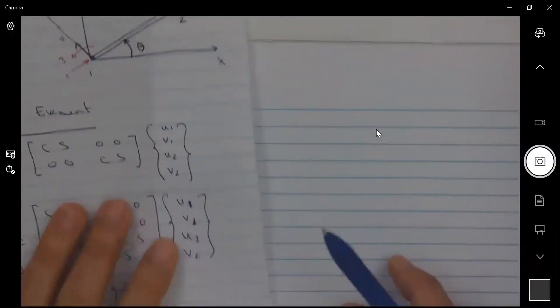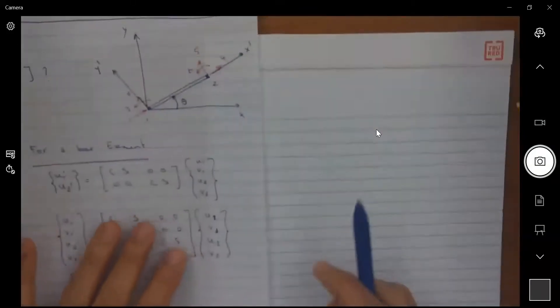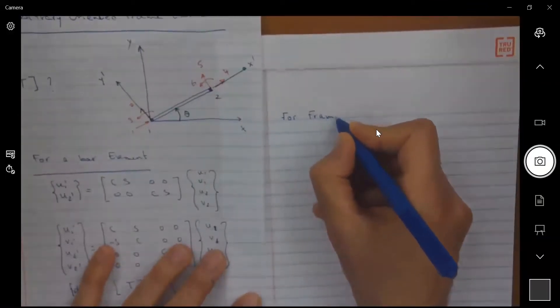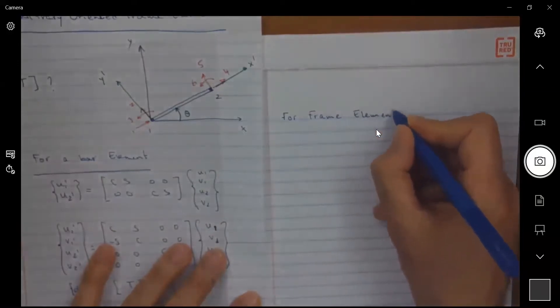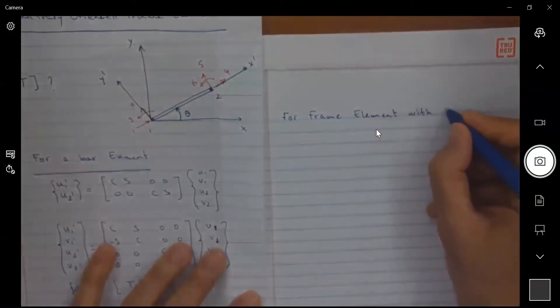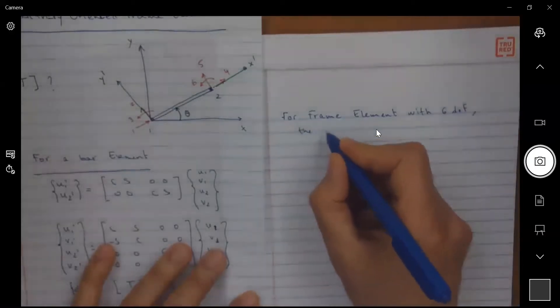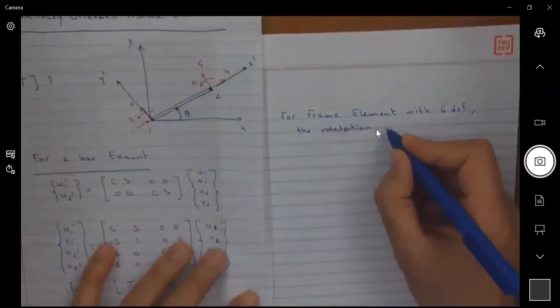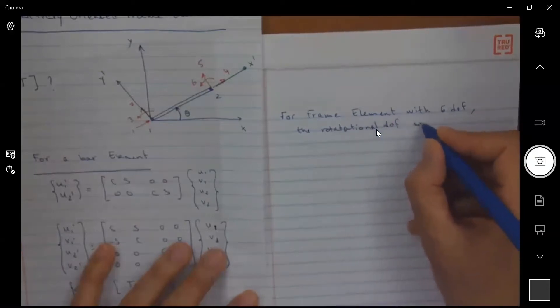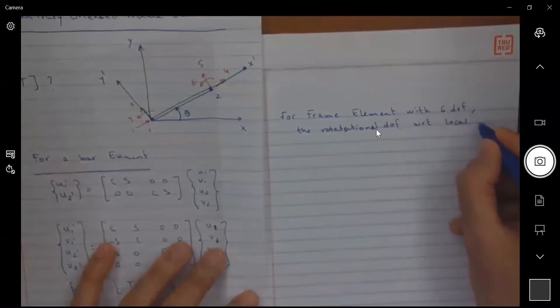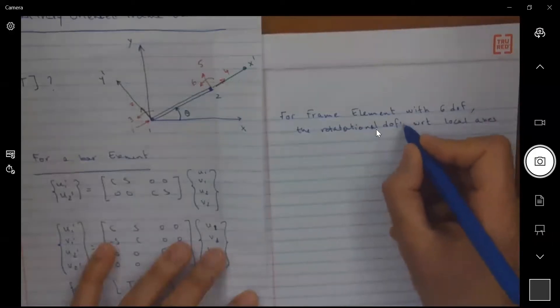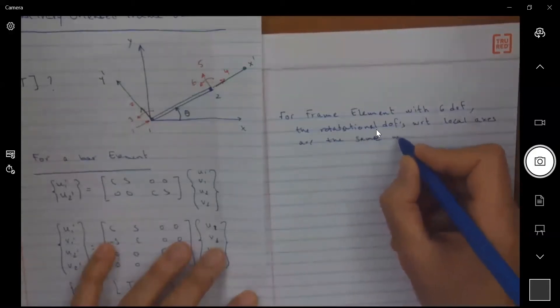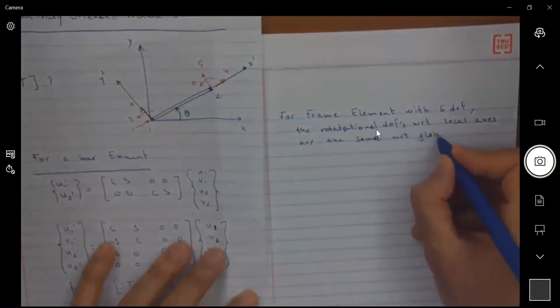So because of that, we can say that for the frame elements with six degrees of freedom, the rotational degrees of freedom with respect to local axis are the same with respect to global axis.